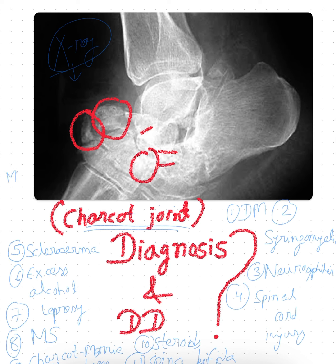Similarly on MRI, the affected bone shows significant edema and the cortical margins appear disrupted. The joint space will also be disrupted. These are the common findings of Charcot joints, and these points can help us diagnose Charcot joints.